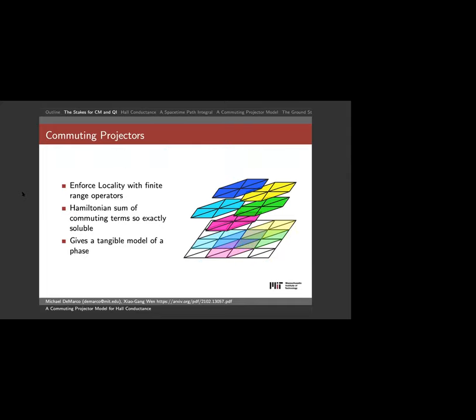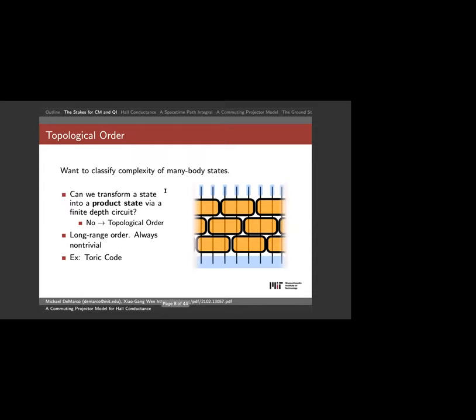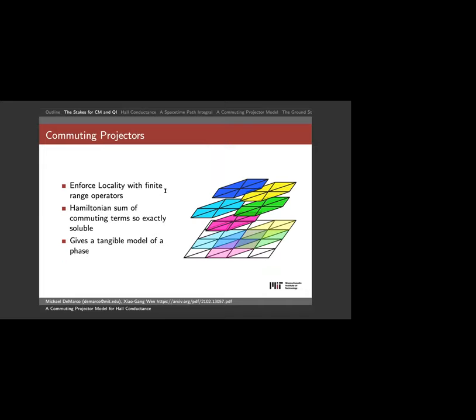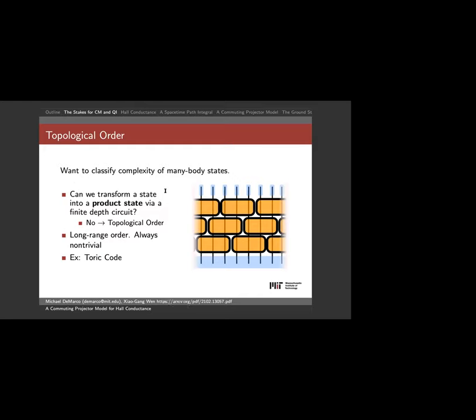This leads me to the classification of many-body states. There's a question about whether 'stabilizer' means Pauli operators — but here it just means commuting projector. Because of the Hilbert spaces we'll be working with, we don't really have Pauli operators in the normal sense; instead we have rotors with exponentials of angular momentum and angular position, and the projectors can be expressed in terms of those.